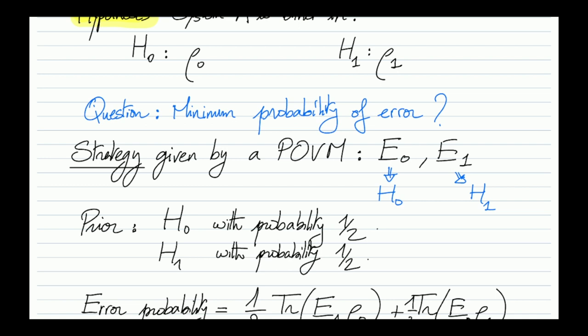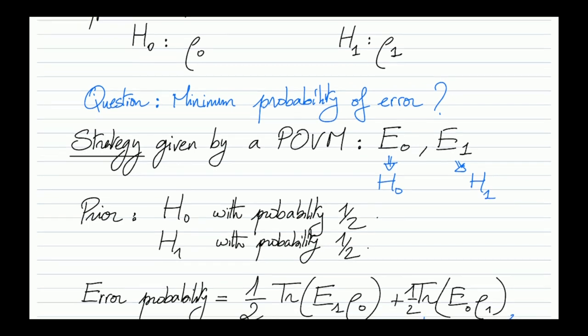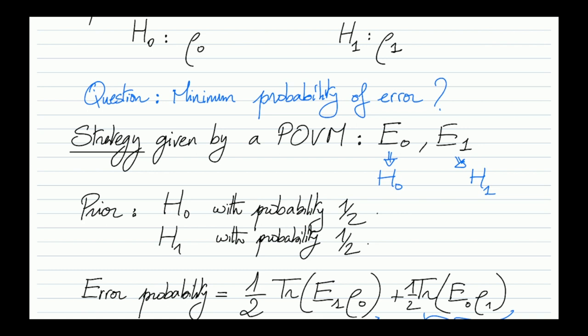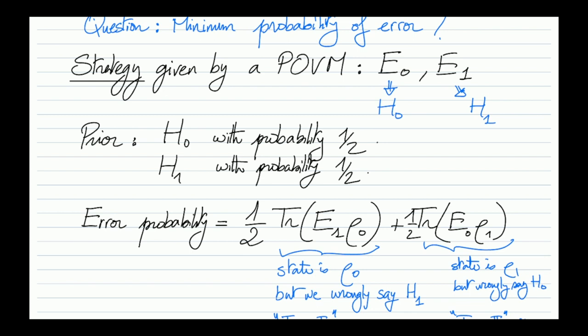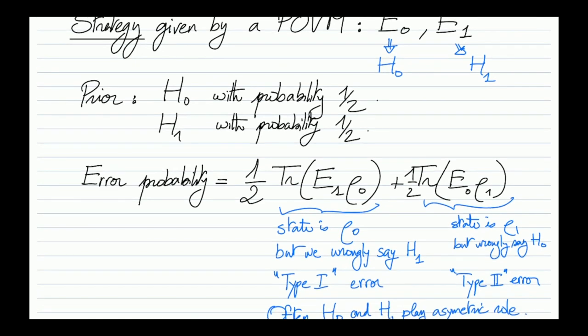What strategy can I use to achieve this? I have access to system A, so I need to do some valid quantum operation to output hypothesis zero or one. The most general way of modeling this is a POVM with two outcomes zero and one, modeled by E_zero and E_one — positive operators that sum to the identity. I'll look at the average error probability, putting a prior of one half on each hypothesis, so the total error is the average of the type one and type two errors.